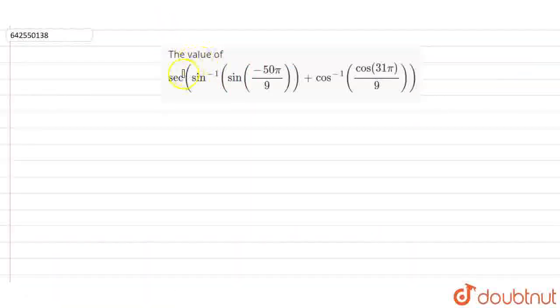So, we have to find the value of this given expression. And this is sine inverse sine of minus 50 pi by 9 plus cos inverse of cos 31 pi by 9. So, let us solve it separately. Let this be 1 and this be 2.